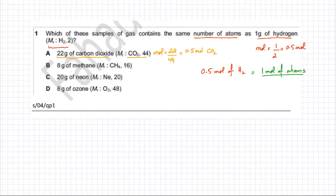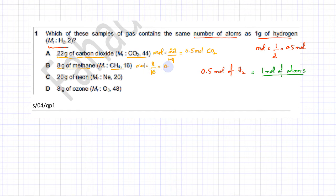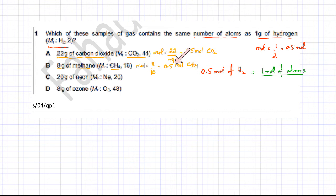Option B: 8 grams of methane (CH₄). The molar mass of CH₄ is 16, so moles = 8 divided by 16 = 0.5 moles of CH₄. One molecule of CH₄ has 4 hydrogen atoms and 1 carbon atom, giving 5 atoms per molecule. So 0.5 moles × 5 = 2.5 moles of atoms. Option B is not correct either.